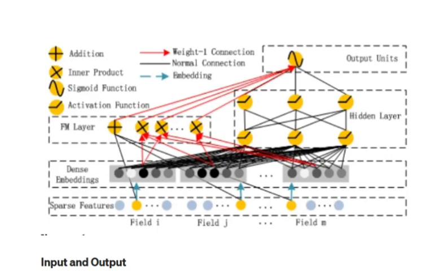This will include the user-item interaction alongside user and item features. The next step is to convert these features into one-hot encodings. Categorical features in the dataset are converted into sparse one-hot encodings; continuous features are left as they are. The next layer is an embedding layer, where these one-hot encoded features are then fed into a dense embedding layer. We generate embeddings for each of the one-hot encoded features along with the continuous features, with a fixed embedding size for each feature.